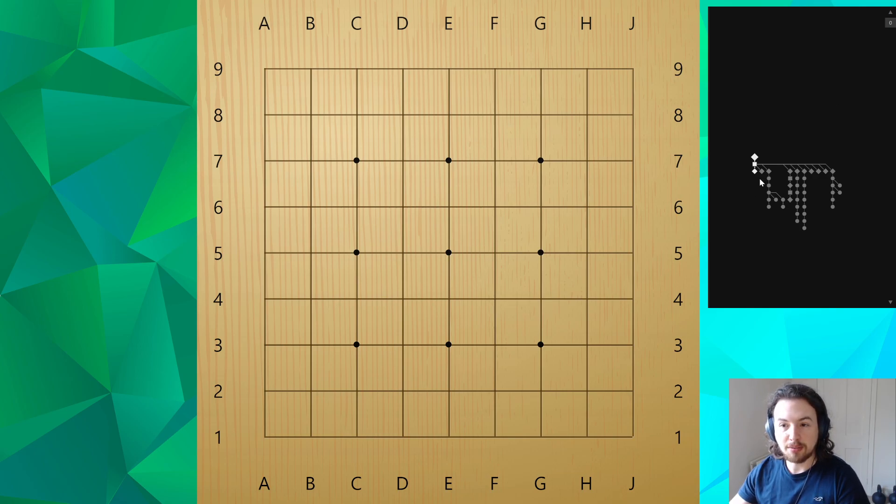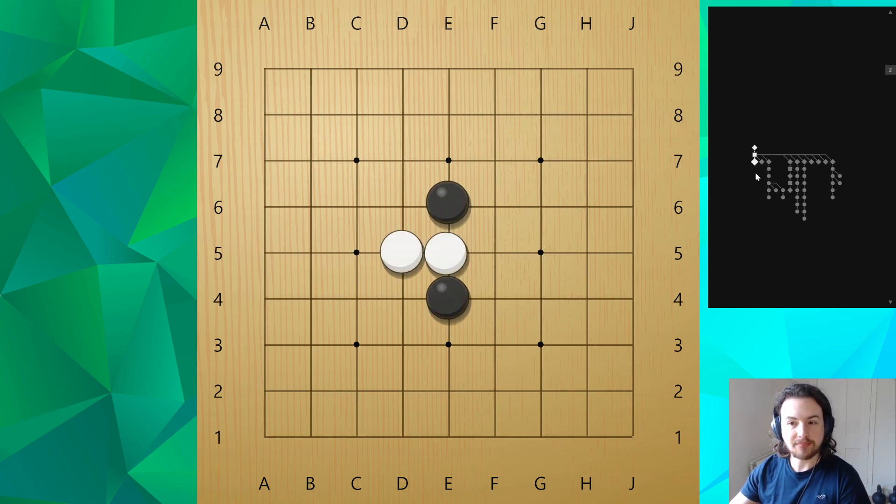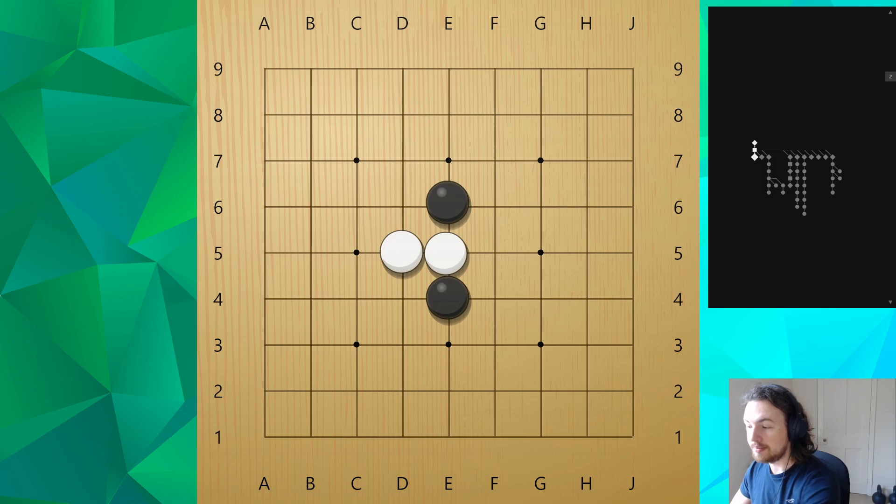So I have a couple of shapes I want to share. We'll start with the first one. In this first one I want to talk about connection. In Go there's a general idea that if you're connected with your own stones then you're strong, and if you separate your opponent's stones then they are weaker and therefore you are strong. So it's important that you don't get totally disconnected.